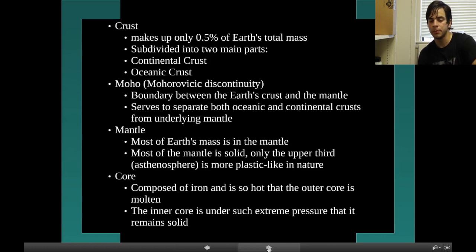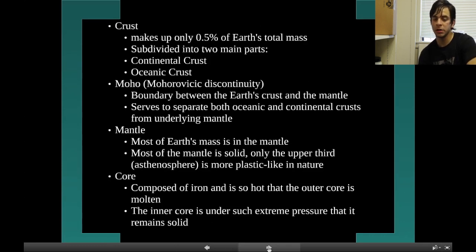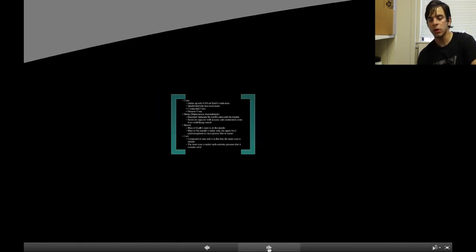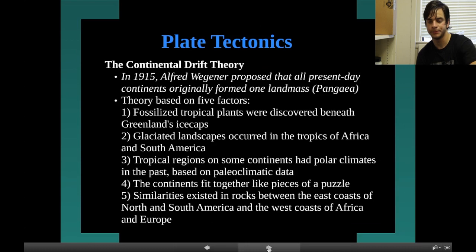The mantle contains most of Earth's mass. Most of the mantle is solid, and only the upper portion known as the asthenosphere is more plastic-like in nature. The core is composed of iron, and it's so hot that the outer core is molten. The inner core is under such extreme pressure that it remains solid.